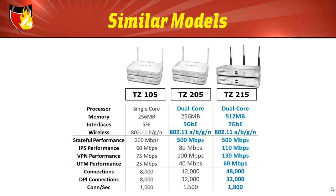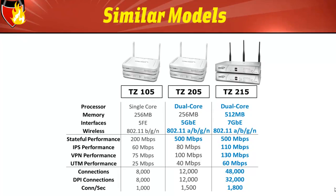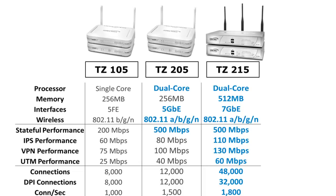To give you a quick comparison of the SonicWall TZ series, there are three models available: the 105, the 205 which we just covered, and the 215. The 205 has a couple of advantages over the lower-end 105. First, it has a dual-core processor, which allows it to handle more Internet connections and deliver much better throughput. Plus, it has five gigabit Ethernet interfaces compared to the five fast Ethernet interfaces found only on the 105.